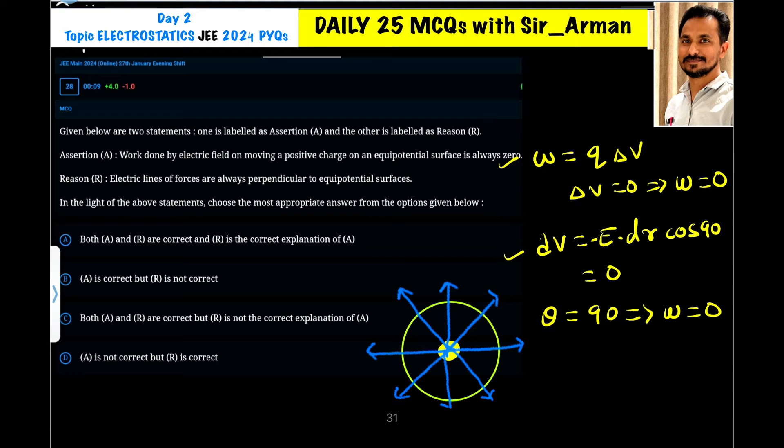Given below are two statements. One is labeled as your assertion and reason is given. Work done by electric field on moving a positive charge on an equipotential surface is always zero.